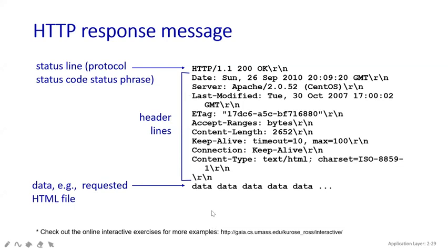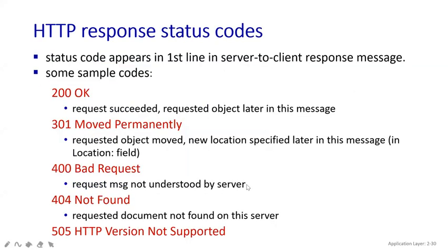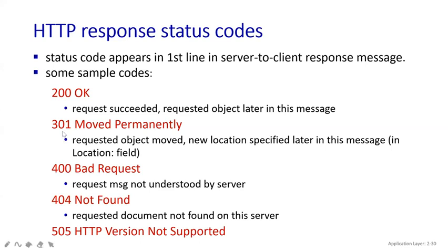Once the request message is sent, this is the format of the response message. Now let's look at the meaning of the status codes. We used 200 OK in the last example — it means connection established, request succeeded, and the requested object is written in the header lines. Code 301 means the file has been moved permanently — there is no such file available on the server.